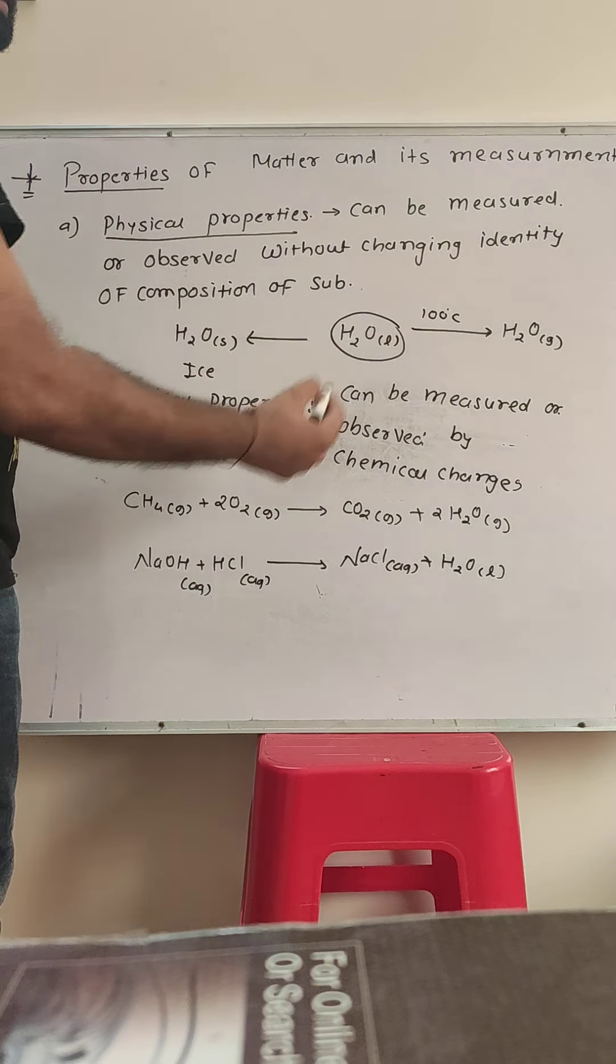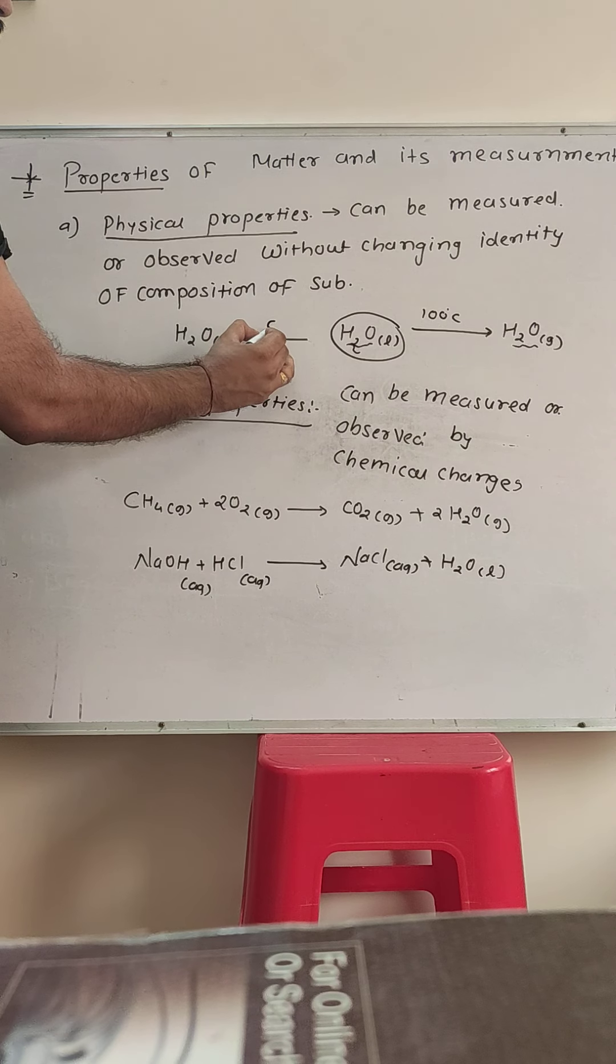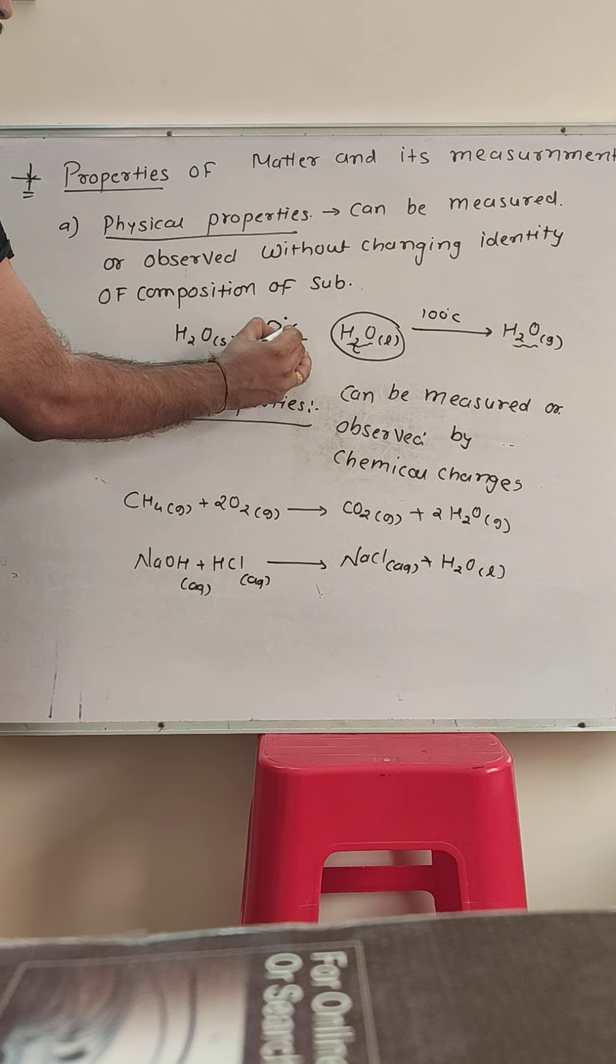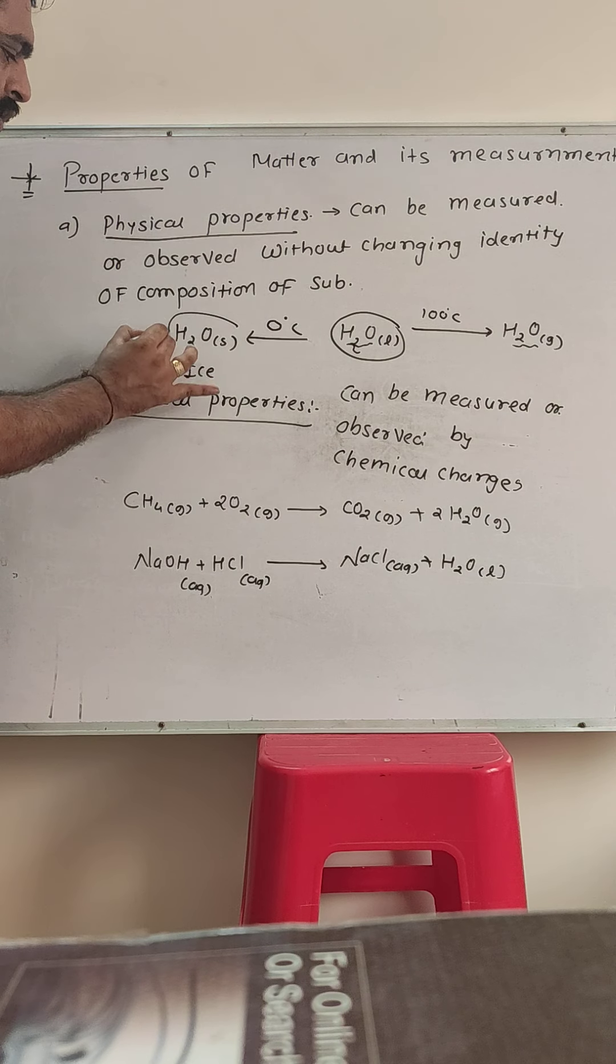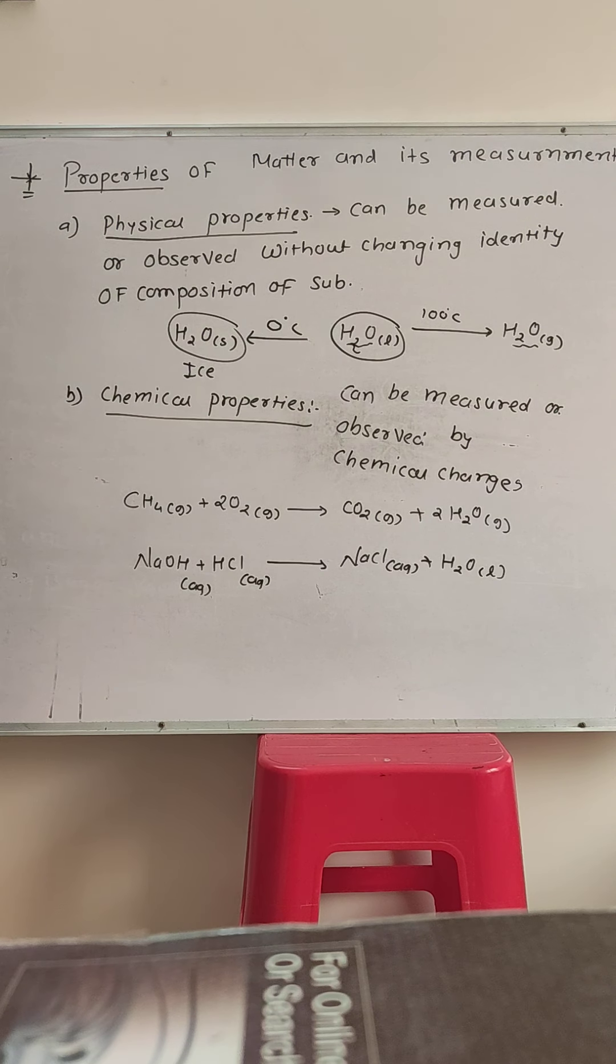At its freezing point, 0 degrees centigrade, H2O becomes solid—it's ice. But even when it's ice, it's still H2O.